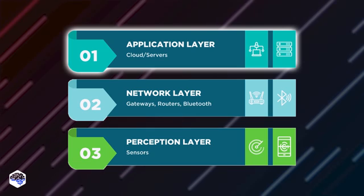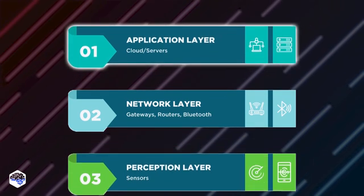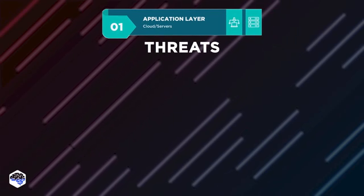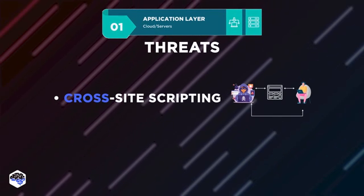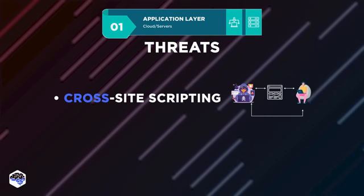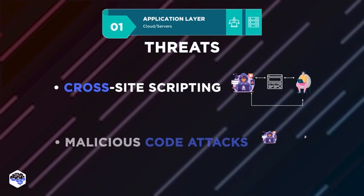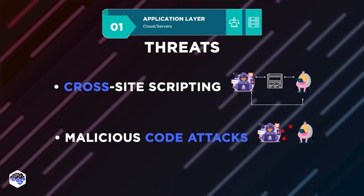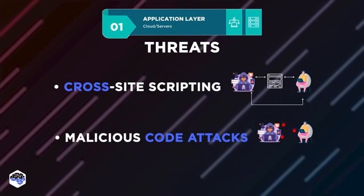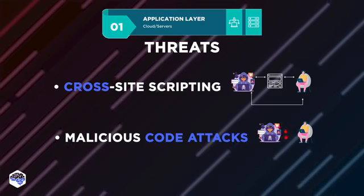The application layer represents all devices that use the IoT devices or systems deployed. Among the most popular ways to attack devices in this layer are cross-site scripting, in which hackers insert a piece of code and run it as site administrators, and malicious code attacks, as computer viruses can easily harm particular IoT devices or even ruin a complicated IoT model.